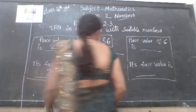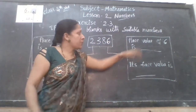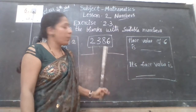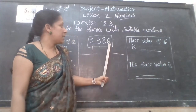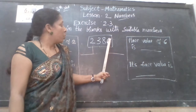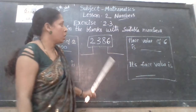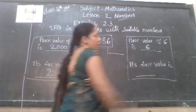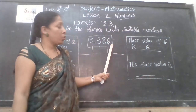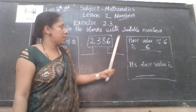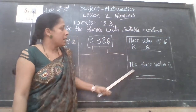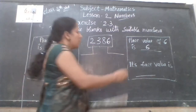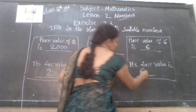Next — place value of 6 is dash. Where is 6? 6 is in the units place. So the place value of 6 is 6 itself, because it is in the units place. Place value is 6, face value is also 6 itself.